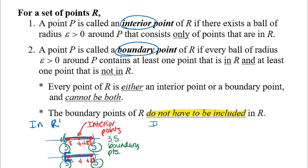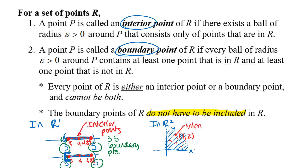In R2, let's think about the first quadrant as a region, not including the axes — I'll draw dashed lines to show the axes are not included. When we did domains of functions, we thought about regions that include or don't include a certain boundary, and we use dashed lines for that. Any point that's actually inside the first quadrant would be an interior point — for example, the point (1, 2) is an interior point.